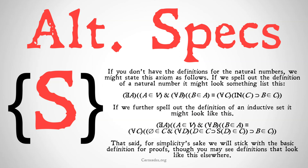Now, if you don't have the definitions for natural numbers, we might state this axiom as follows. If we spell out the definition of a natural number, it might look something like this: there exists some class A such that A is a member of the universal class, and for all B, B is a member of A is materially equivalent to for all C, if C is an inductive class, then B is a member of C. Or we might further spell out the definition of an inductive set: there exists some A such that A is a member of V, and for all B, B is a member of A is materially equivalent to for all C, the null set is a member of C, and for all D, D is a member of C implies that the successor of D is a member of C, implies that B is a member of C. For simplicity's sake, we're going to stick with the basic definition for proofs, though you may see definitions that look like this elsewhere.